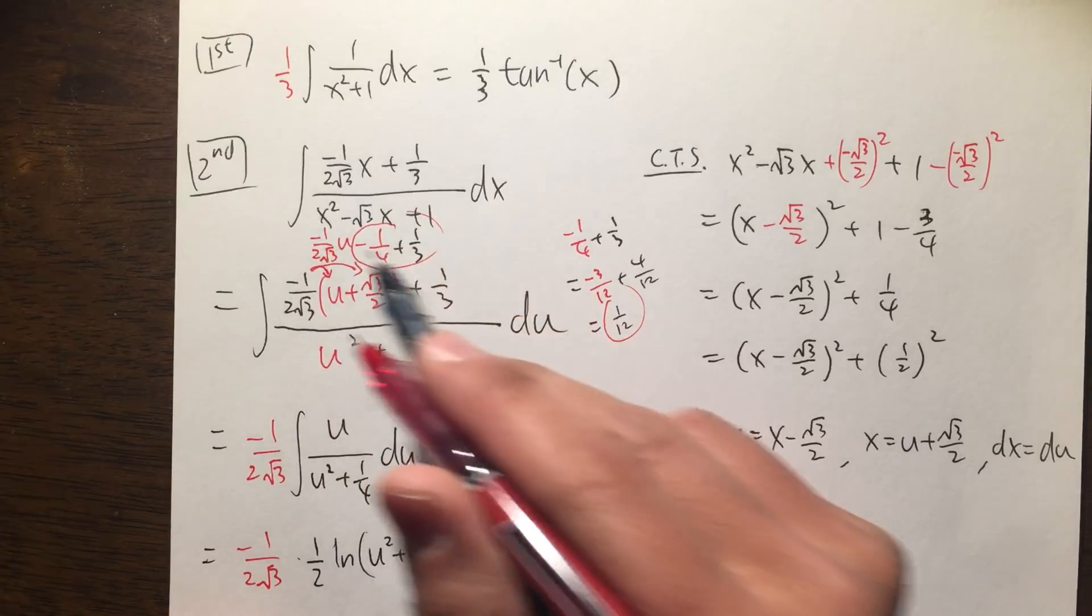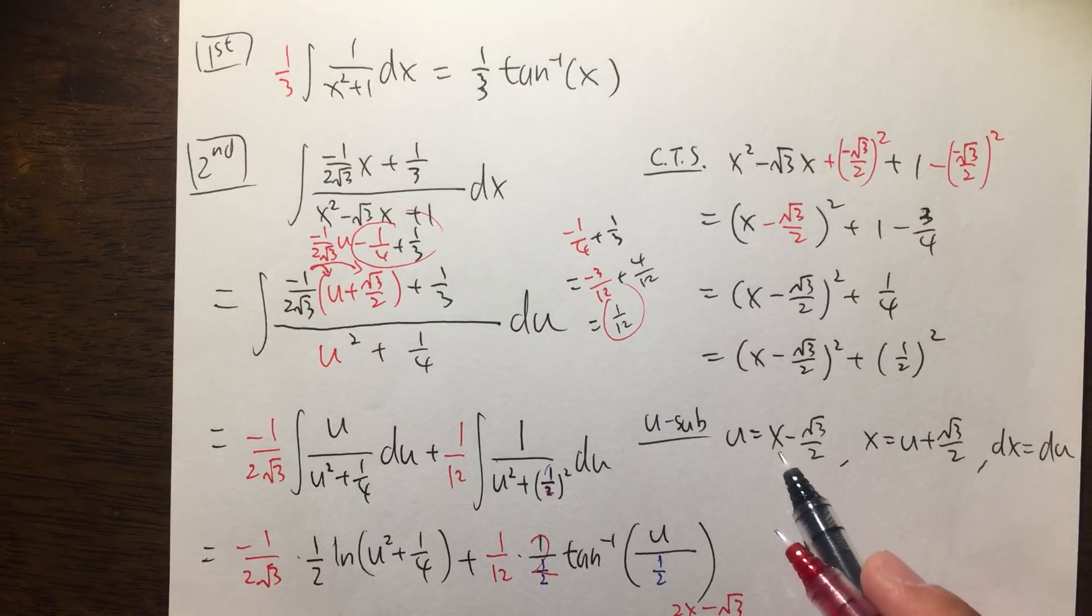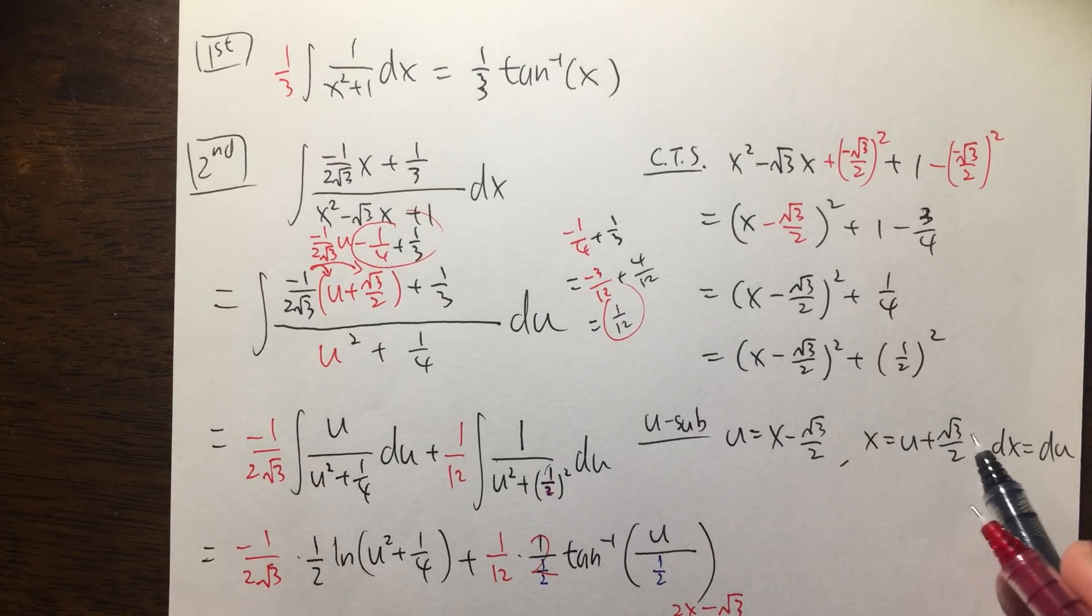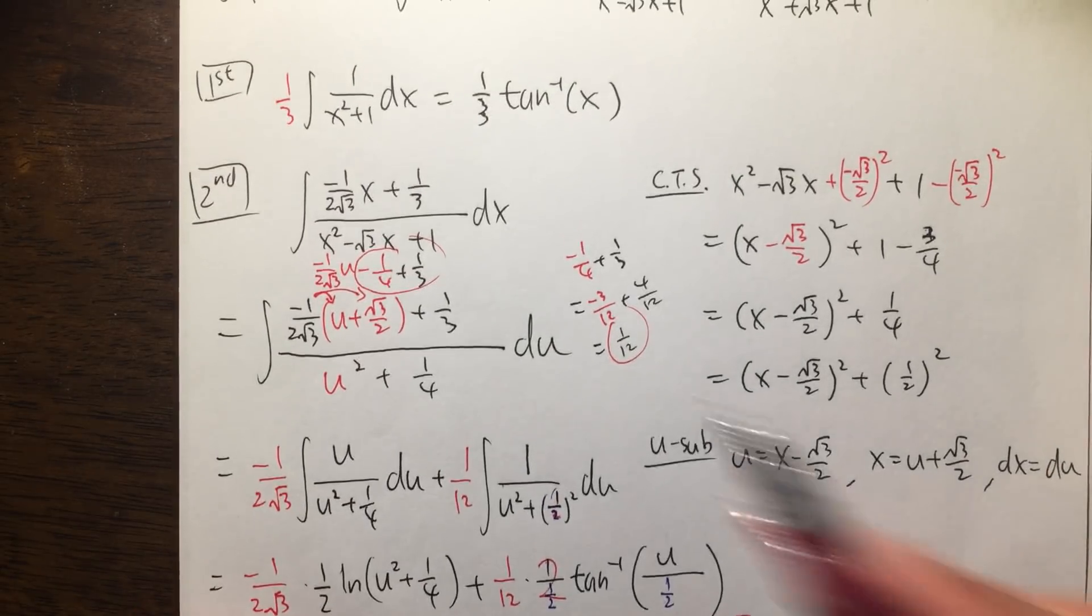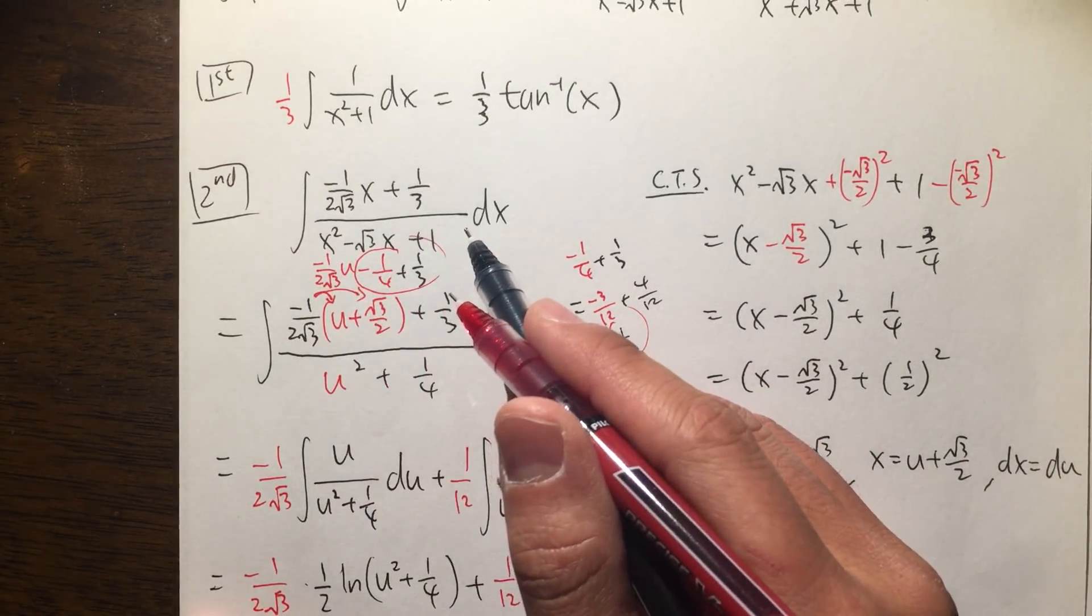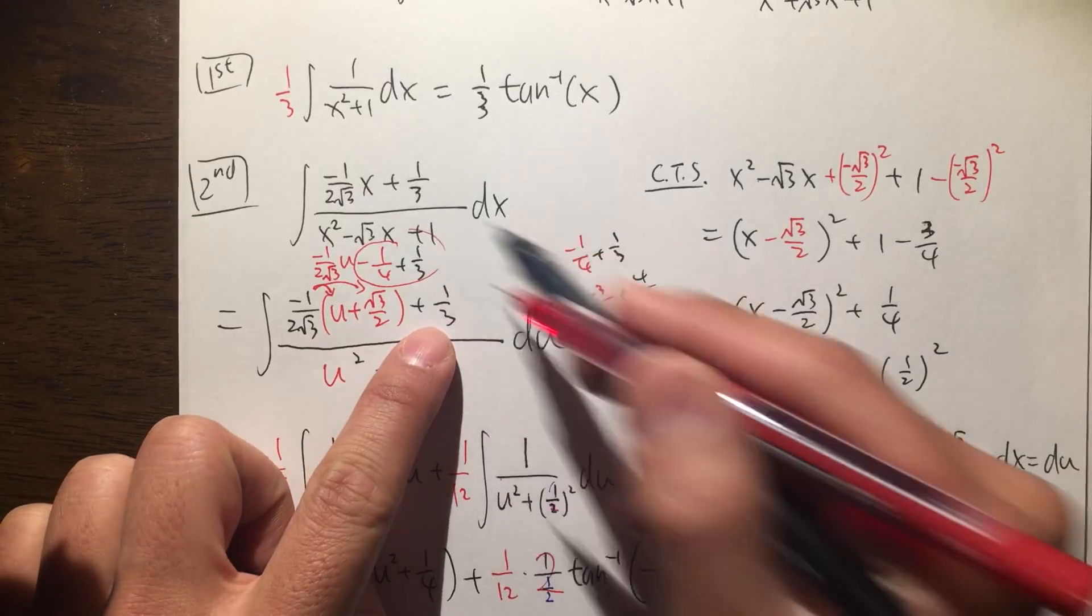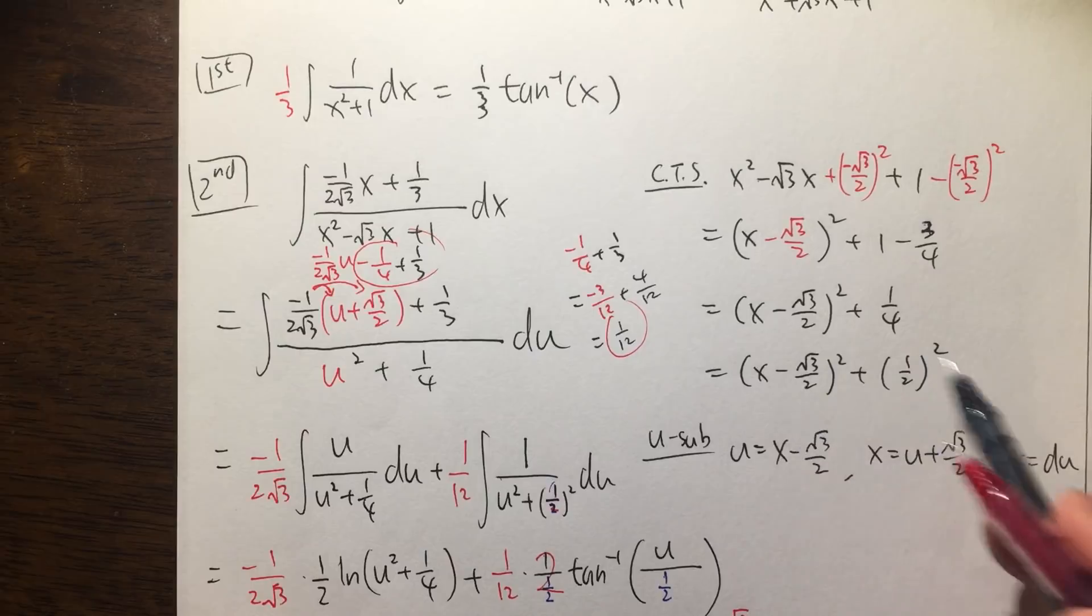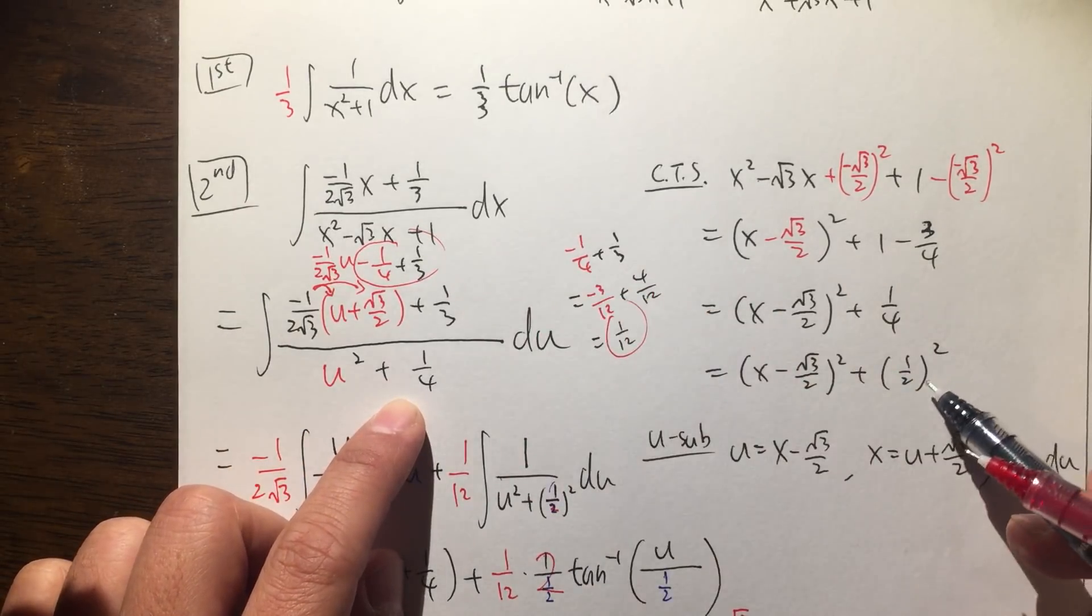Okay, so we will also do a quick u substitution, that u equal to the inside here. U is equal to x minus square root 3 over 2, and then let's isolate the x. So x, add this to both sides, so you get u plus square root 3 over 2. Differentiate both sides, dx is the same as du. And then we'll take this integral from the x world to the u world. So this x becomes this right here, and then you still have the plus 1 third, and then this right here is that, and we said this is equal to u, so we have u squared plus 1 over 4 pretty much.